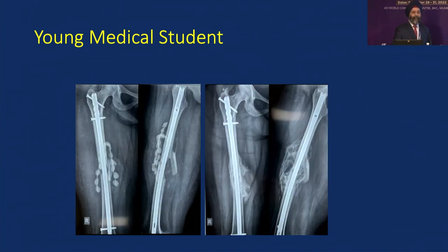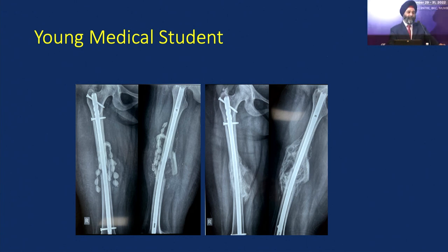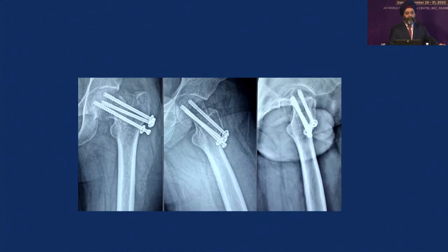A few days later, she had discharge from the fracture site, so I did a re-debridement and put in antibiotic cement beads. I took out the beads after the infection settled and biochemical parameters were normal, and it went on to unite on its own. A lot of people might debate this needs a bone graft. In my view it did not, and I was lucky. Infection is one scenario where we should consider going ahead and bone grafting.